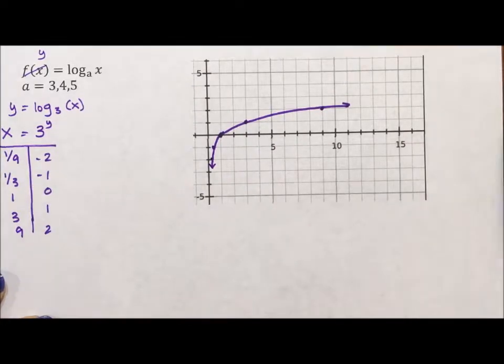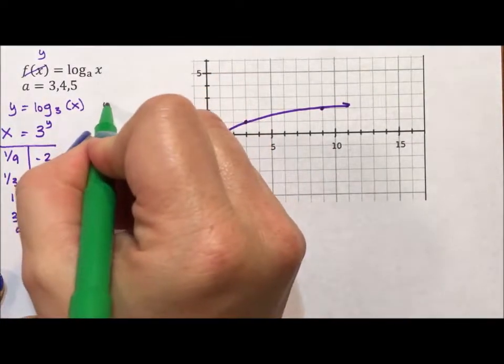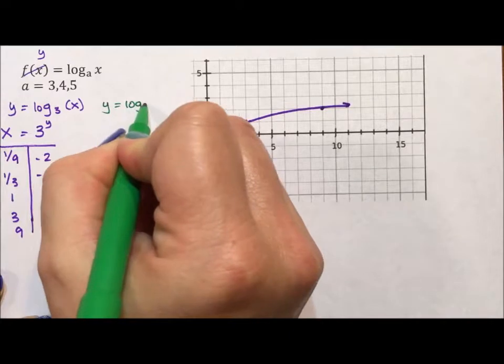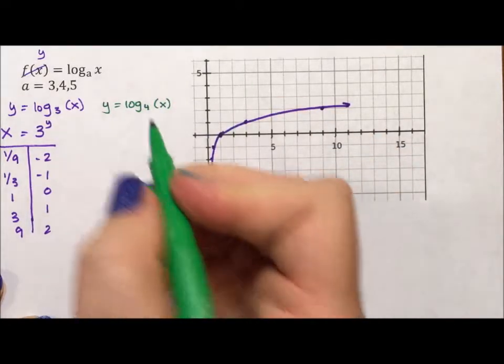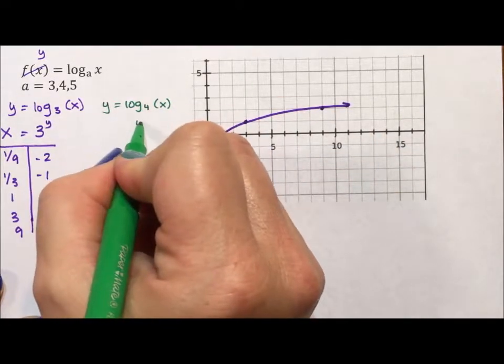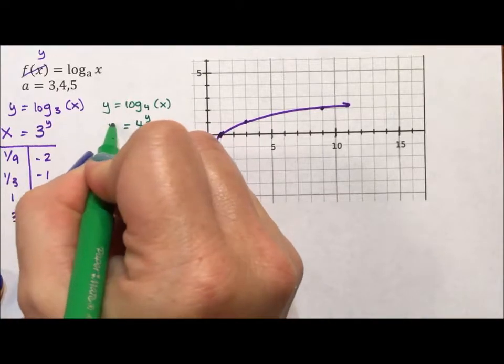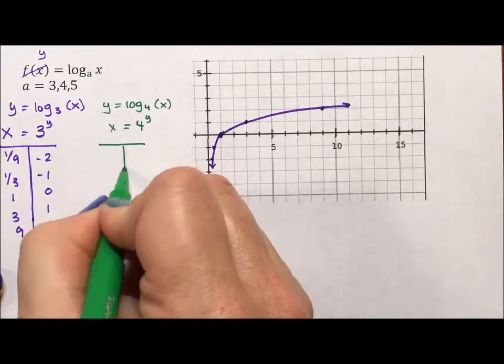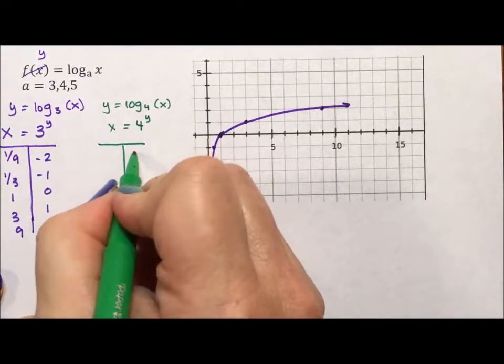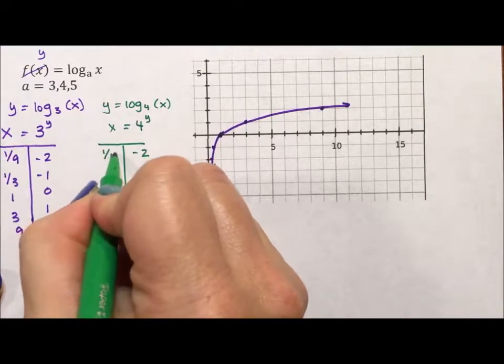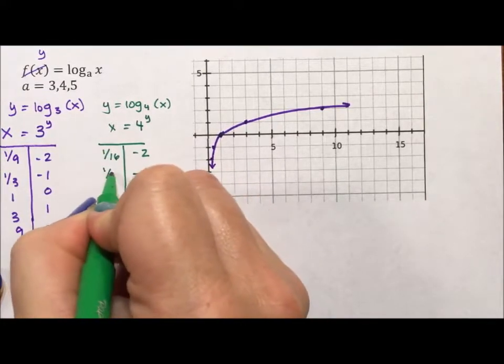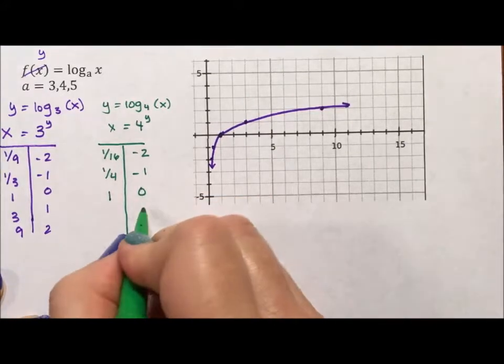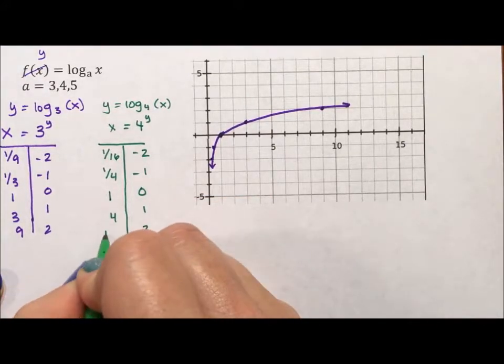All right, now let's see what happens when instead we have y equaling log base 4 of x. So this is saying 4 to what power equals x? Again, we'll put in for our y values, negative 2 is 1 over 16, negative 1 is 1 over 4, 0 is 1, 1 is 4, and 2 is 16.